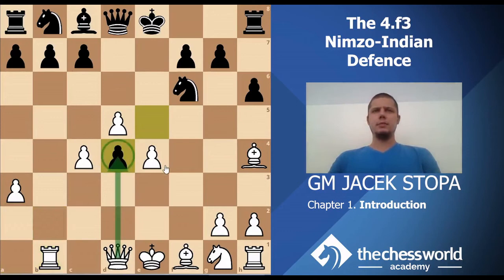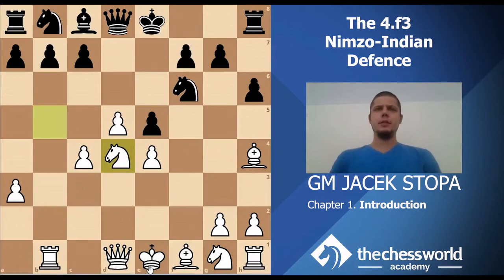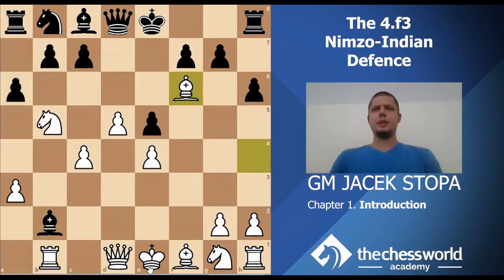I believe queen d4 is quite good for White here — a pair of bishops and enough pieces to take care of the king. It's not like Black can put into question the position of White's king. So of course, a6.